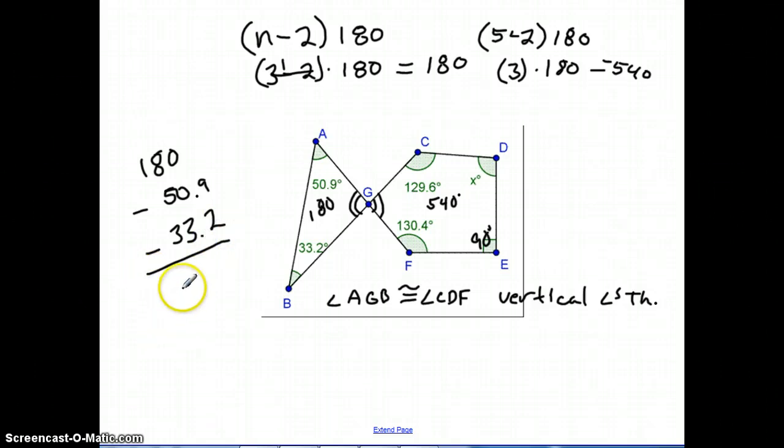So once I do this, I'm going to end up with what angle AGB is equal to. And once I know that angle AGB, then I also know that angle CGF is the same exact thing. So if I subtract these, I'm going to get 95.9.